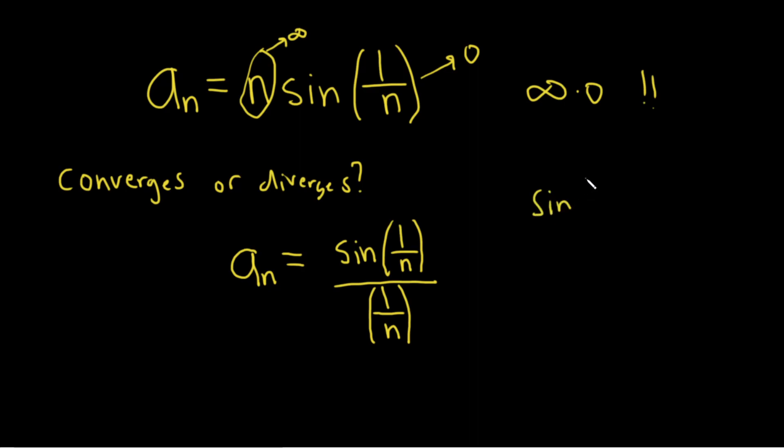you really end up taking sine of 1 over n and multiplying by the reciprocal of 1 over n, which is n over 1. So it ends up being the same thing. You can just put the n in the front. We end up with this.